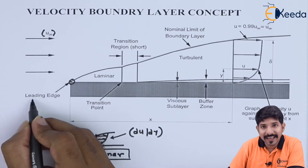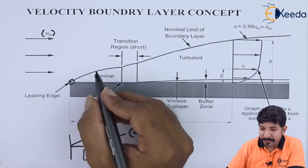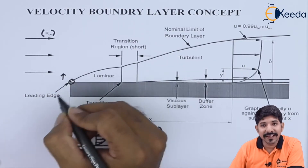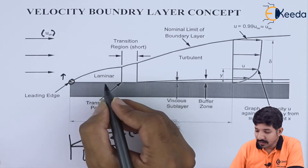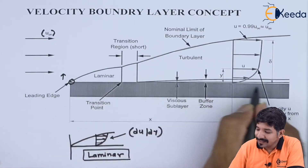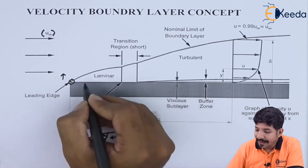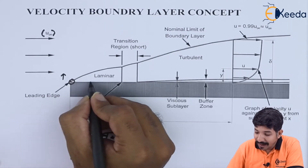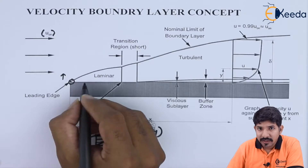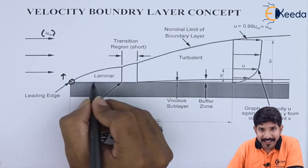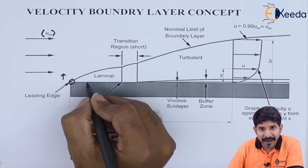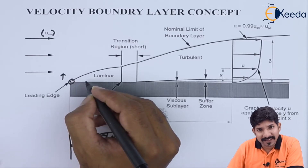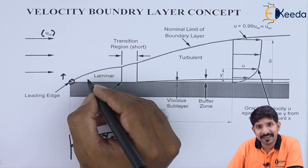Now this they call as a leading edge. And then what will happen as we gradually go in the upward direction, the velocity will keep on increasing. So the first layer will experience zero velocity, and the particles next to the layer adjacent to the solid layer will also have their velocity retarded.